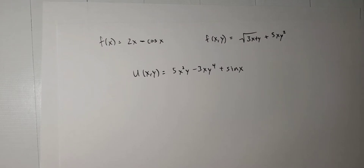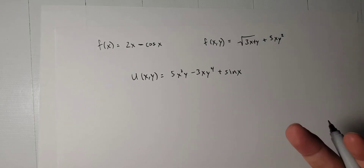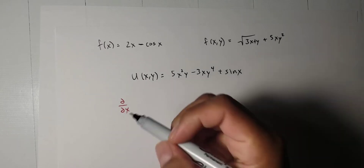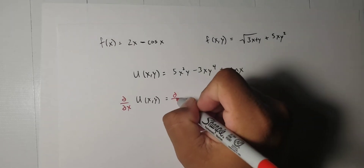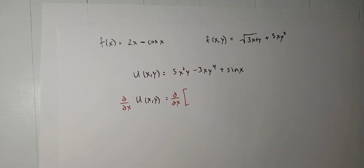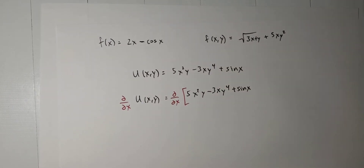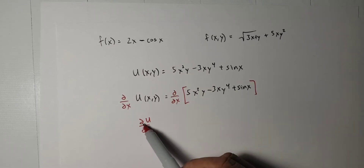When we take the partial derivative, we're taking the derivative of the function with respect to one of the variables — either x or y — while treating the other variable as a constant. So if I want to take the partial derivative of u with respect to x, we use the notation del del x, and apply del del x to u of xy, doing the same on the other side as well.